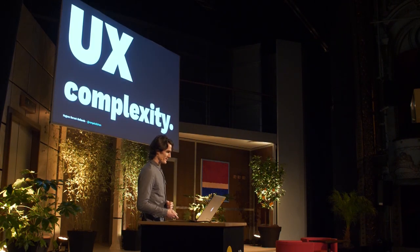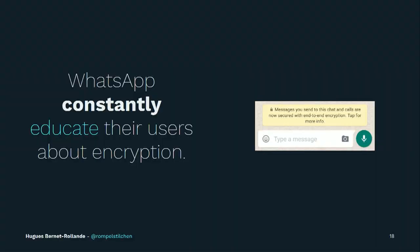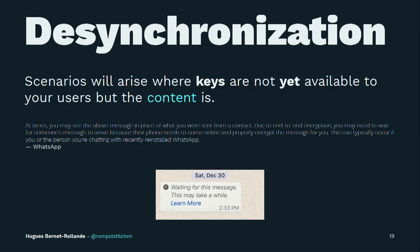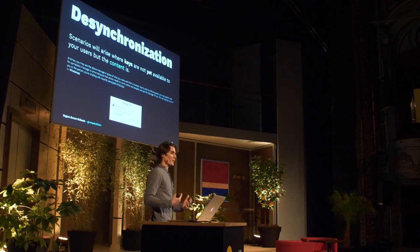That leads to UX complexities. WhatsApp constantly educates the user about that — for example, there's a message that tells you this chat is now secure. But there are more complex scenarios. Desynchronization can arise: there will be scenarios where your keys are not yet available but the content is. For example, if you install WhatsApp on a new device, you don't have keys yet, and the sender needs to re-encrypt that message with your new keys. It's fairly complex to explain — WhatsApp's explanation is lucky if you understand it.